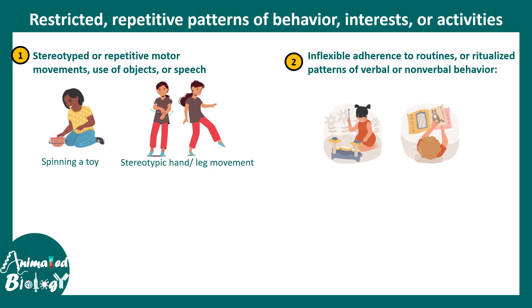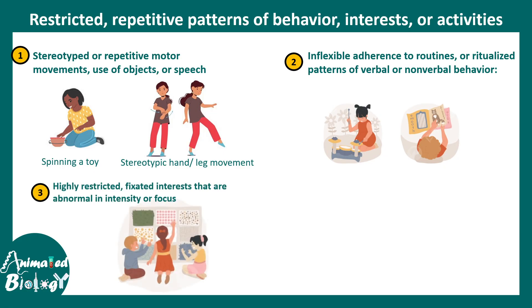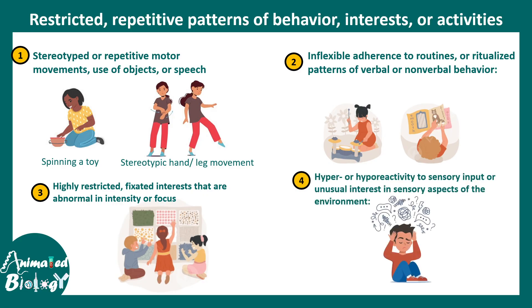Inflexible adherence to a routine or ritualistic pattern of behavior is very typical to autistic children. For example, a child who likes to play drum would play it at a specific time of day in a specific corner of the room — this kind of repetitive behavior is followed meticulously all the time. They also have highly restricted, fixed interests in particular objects and do not like to explore many things. Overall they perceive the world differently, sometimes showing hyper- or hypo-active sensory responses, being agitated by certain sounds, colors, or textures.